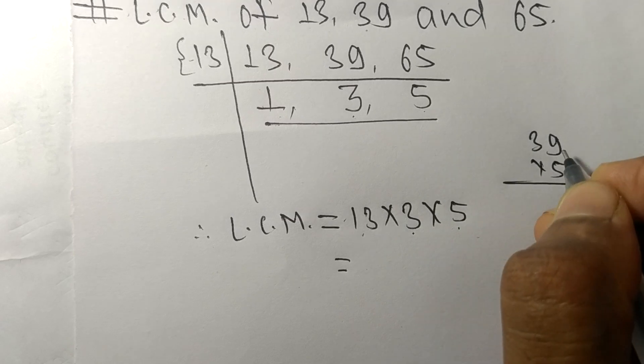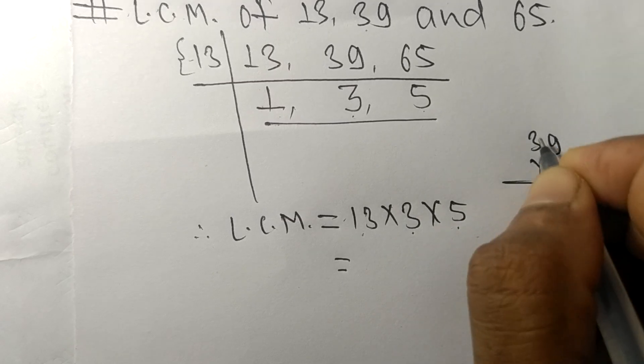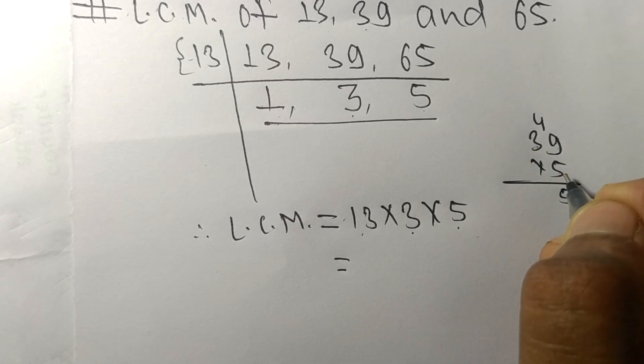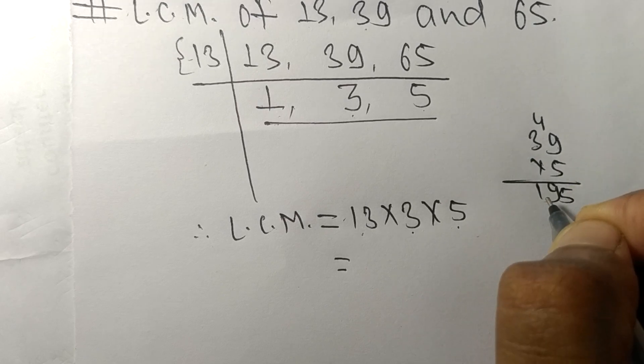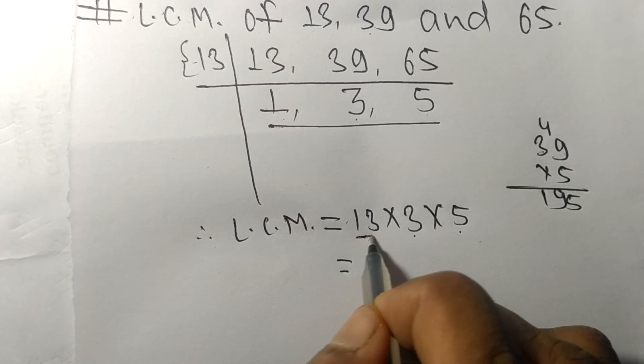So 9 times 5 equals 45, carry 4. 3 times 5 equals 15, plus 4 equals 19. So by multiplying all these numbers we got 195.